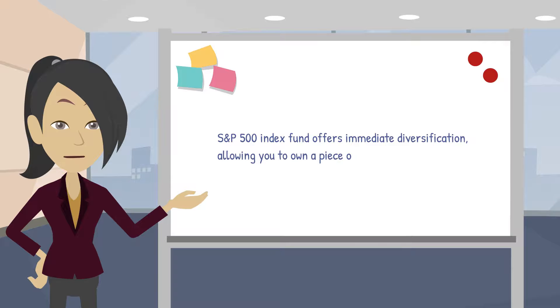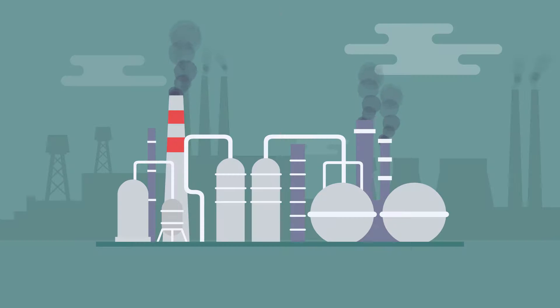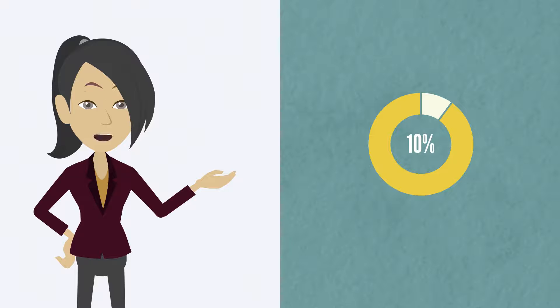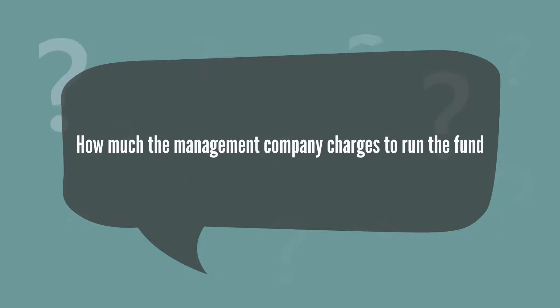Like nearly any fund, an S&P 500 Index Fund offers immediate diversification, allowing you to own a piece of all those companies. The fund includes companies from every industry, making it more resilient than many investments. Over time, the index has returned about 10% annually. These funds can be purchased with very low expense ratios, how much the management company charges to run the fund.